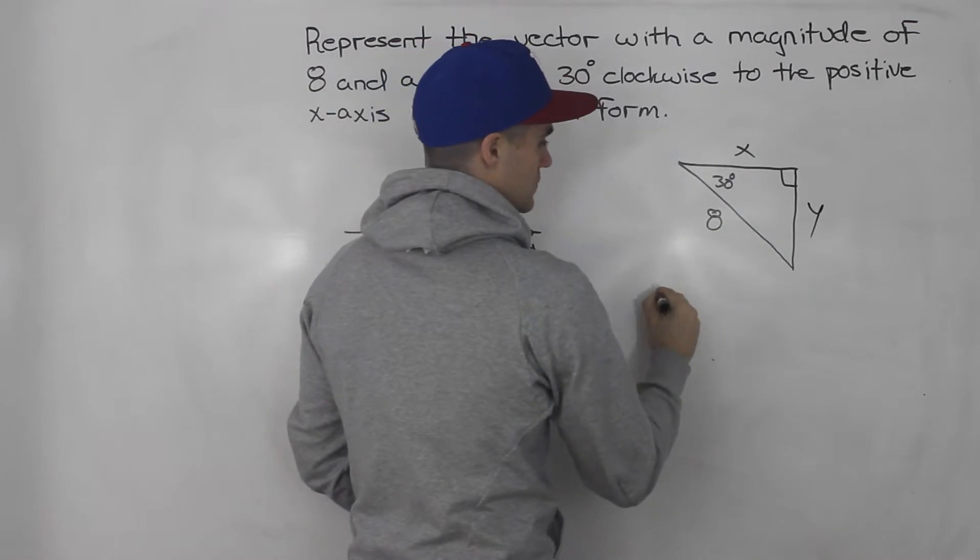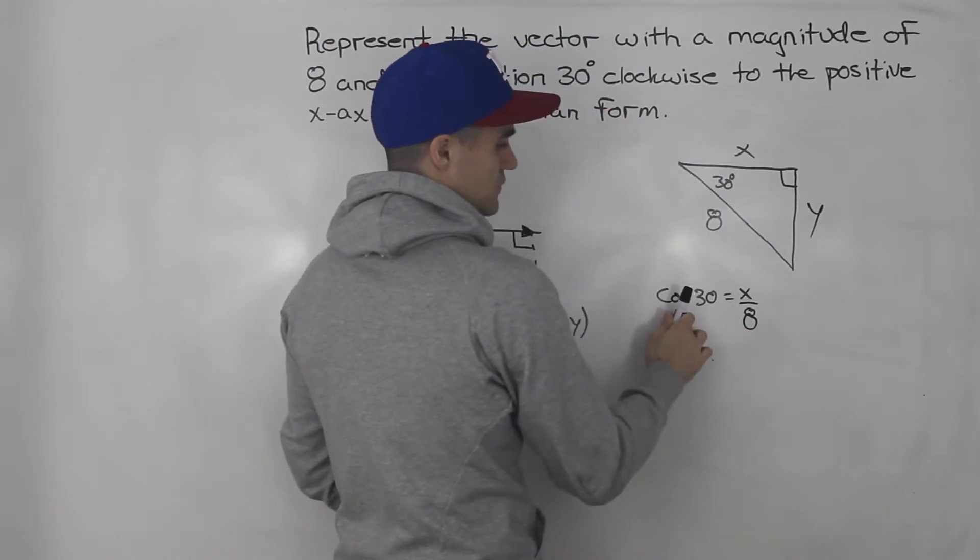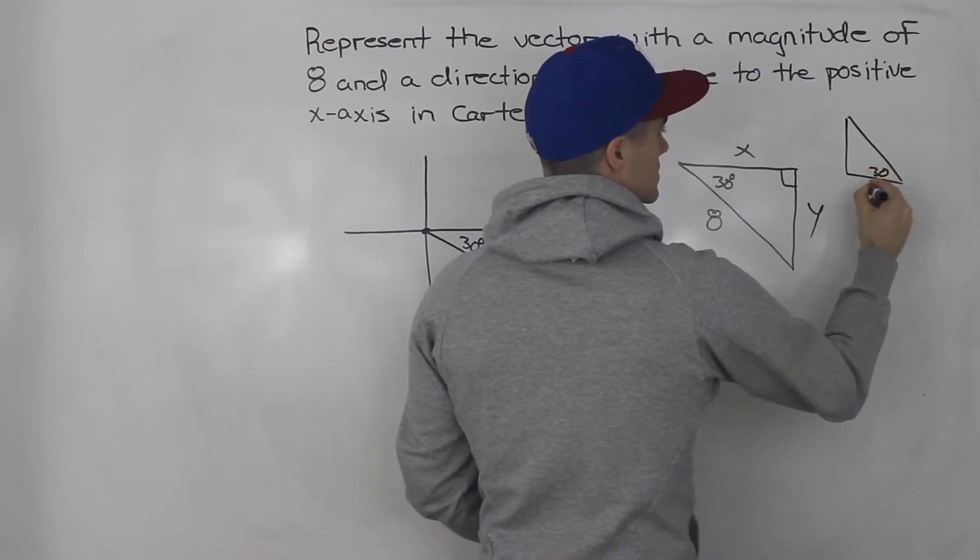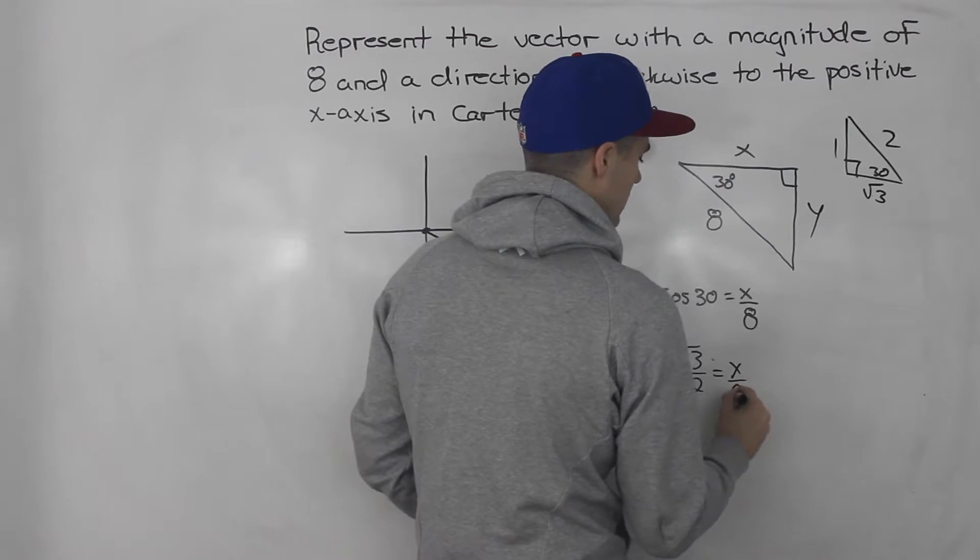So to solve for the x value, notice that we would use cos. So we go cos of 30 equals x over 8. And cos of 30, if you remember your special triangles, so 30 degrees is root 3, 1, and 2. So it would be root 3 over 2 equals x over 8.